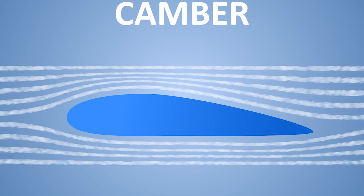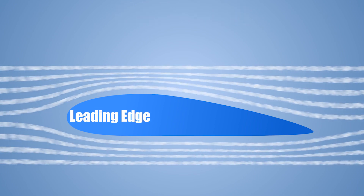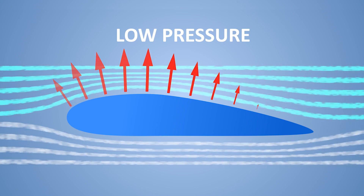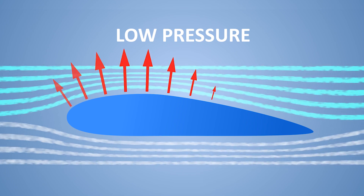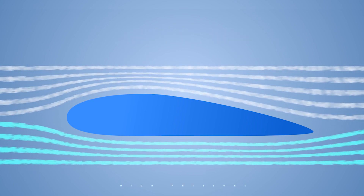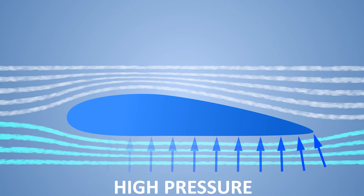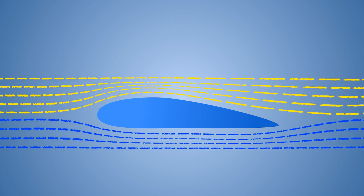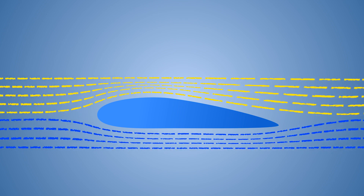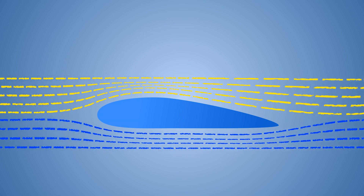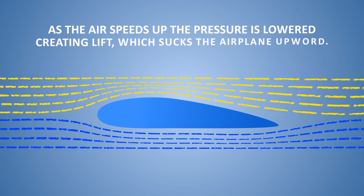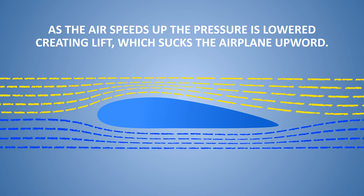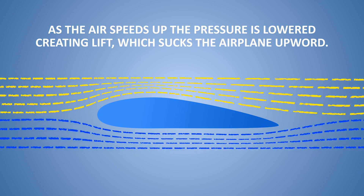When the airplane is flying, air strikes the front of the wing — known as the leading edge — then flows over the cambered wing, creating an area of low pressure which generates lift. Meanwhile, air flowing under the wing pushes the wing up. The air flowing over the wing has to travel faster to meet the air flowing under the wing because of the camber. The key idea is that as the air speeds up, the pressure is lowered.